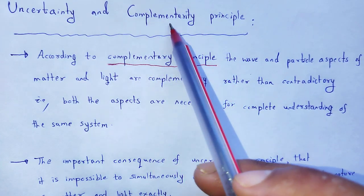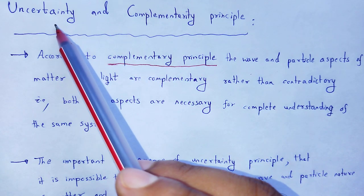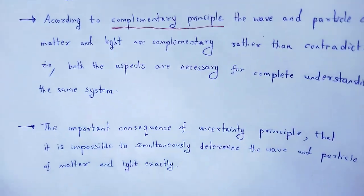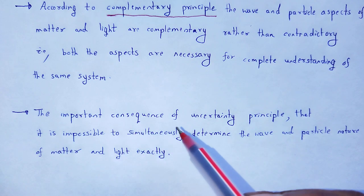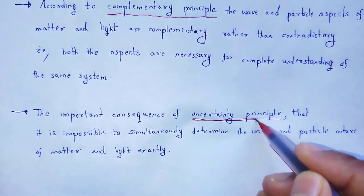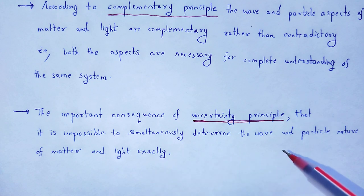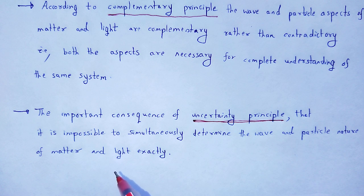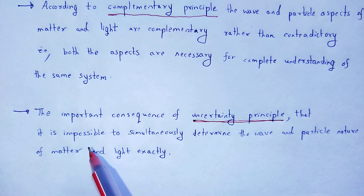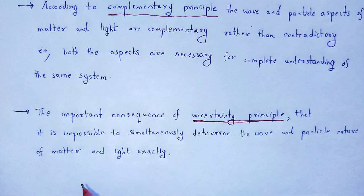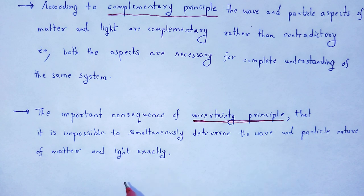Then how is the Complementarity Principle useful to the Uncertainty Principle? In case of the Uncertainty Principle, one important consequence is that it is impossible to simultaneously determine the wave and particle nature of matter exactly. Matter shows both particle as well as wave characteristics. Similarly, light also shows particle as well as wave characteristics. But according to the Uncertainty Principle, we cannot simultaneously determine the wave and particle nature for matter and light.